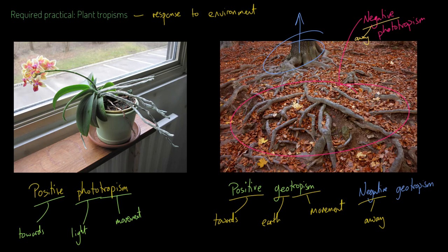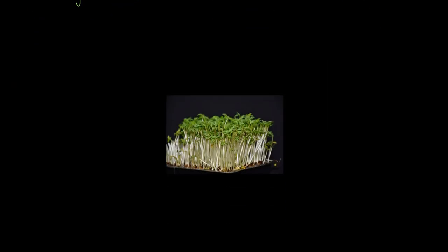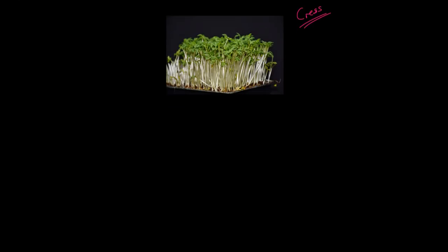So that's the positive and negative tropisms. In this required practical, you are going to grow some plants and observe their responses to their environment — you're going to look at their tropisms. The ones you're probably going to use is cress, because cress grows very quickly and it's nice and cheap for schools to use.